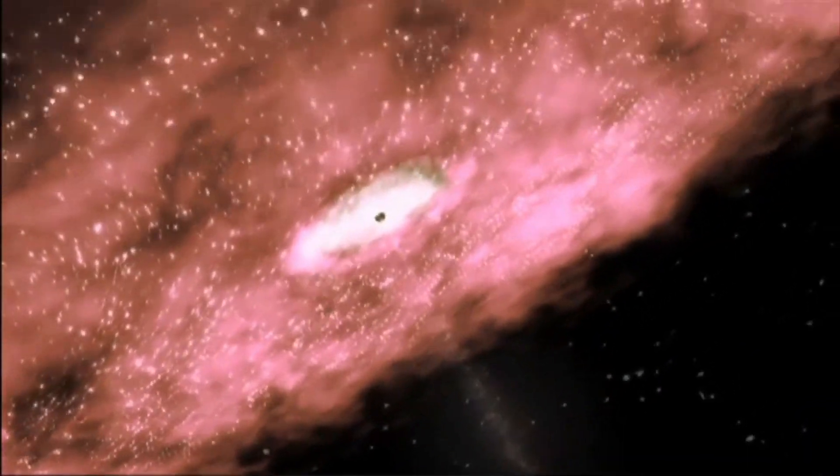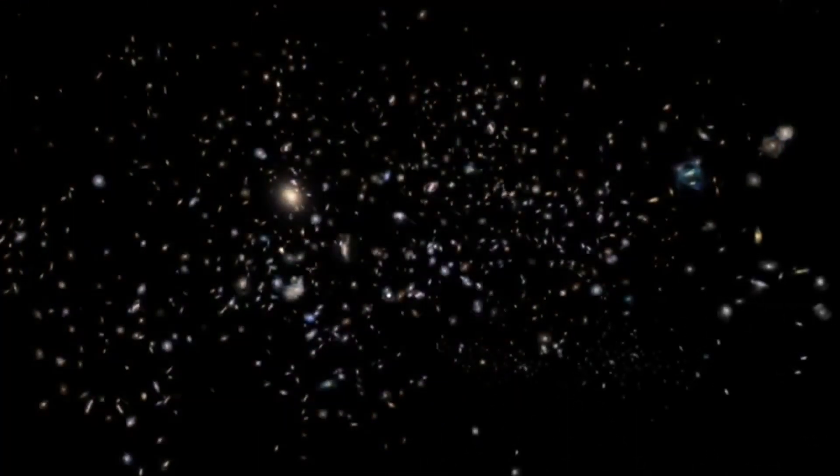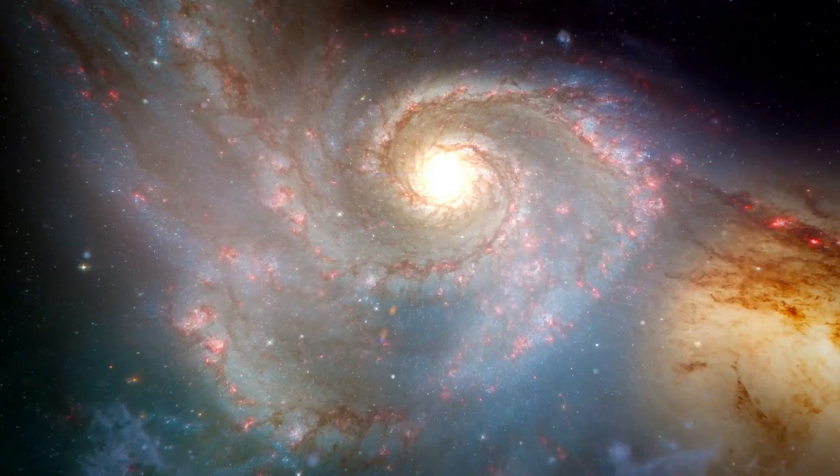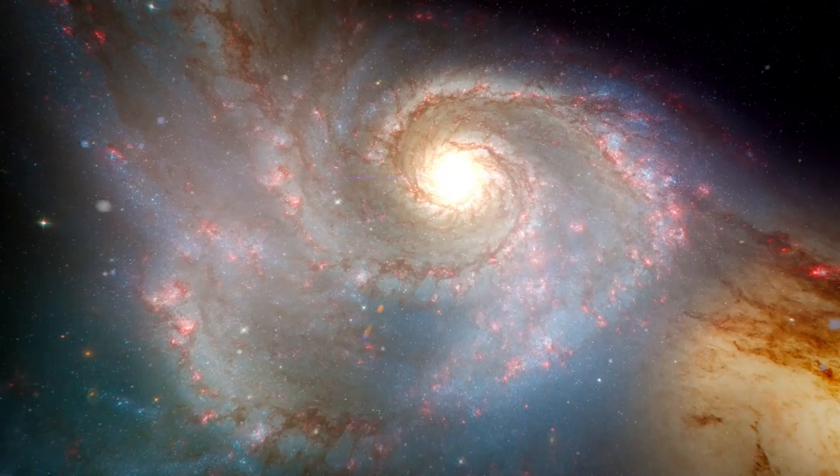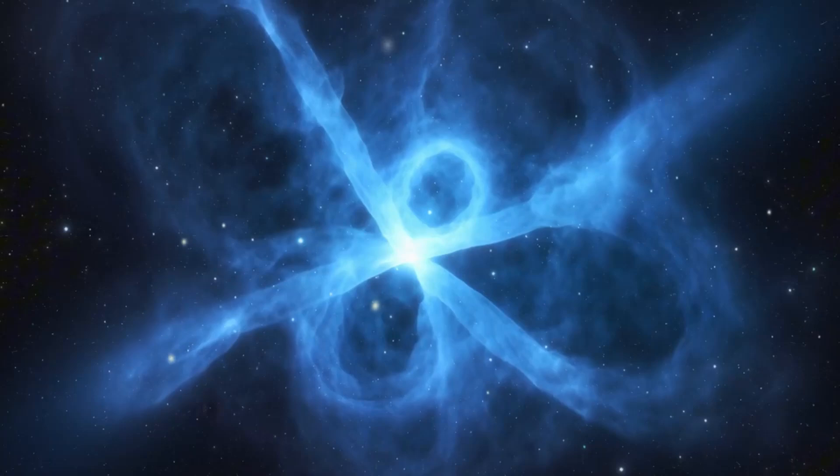As the cycle progresses, the number of sunspots increases. Sunspots are areas of intense magnetic activity and are associated with the rise of magnetic activity from the sun's interior. These sunspots appear in pairs, with opposite magnetic polarities, and move toward the equator over time.